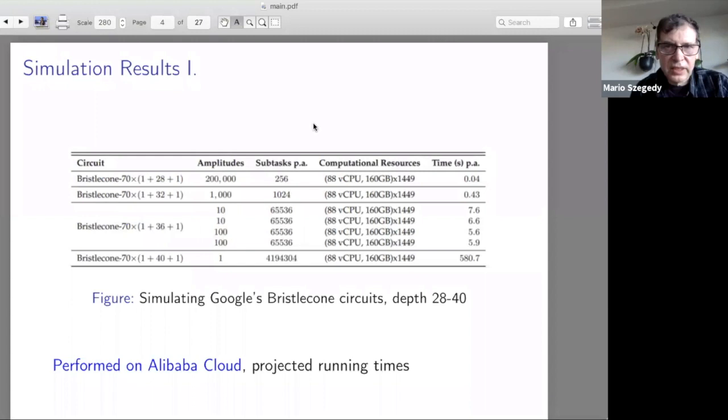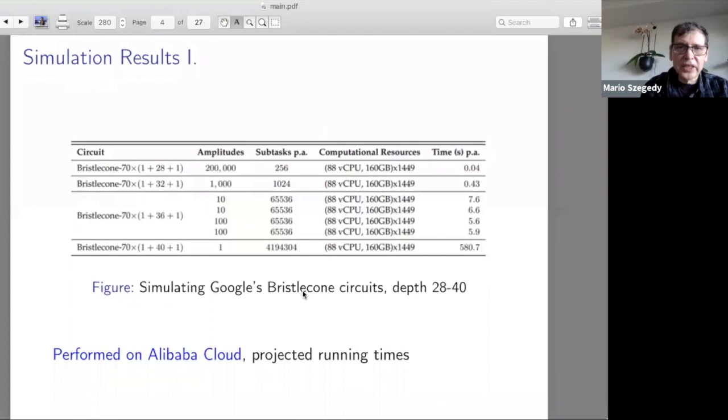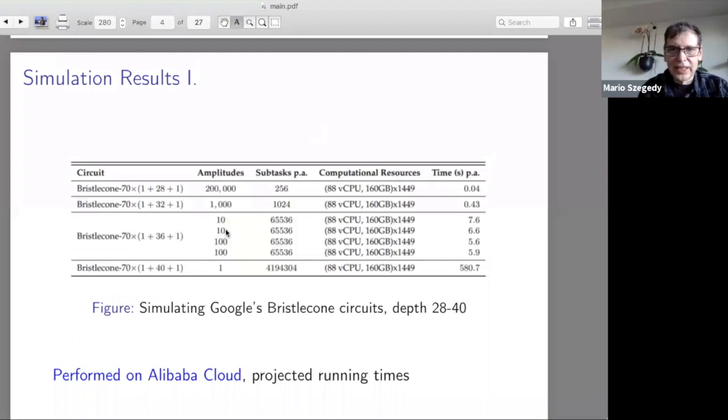As for simulation, we have been doing it since Google's Bristlecone circuit. My colleagues have simulated that, starting at depth 28 but they could go up to depth 40. We see that the time per amplitude is like 580 seconds, which is not that bad at all. I want to mention that these are projected running times, meaning the computation was not done entirely, but enough parts of it were done so it's easy to project how much time it would take.